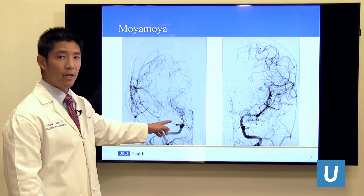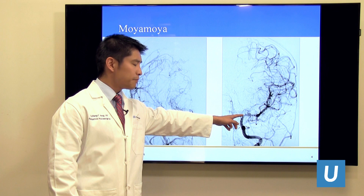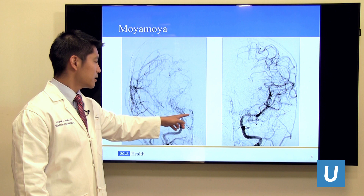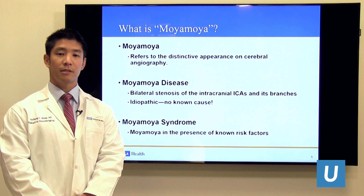Here you see the other side of the same patient, and you can see that Moyamoya is beginning to occur here, but it's not nearly so severe as on this side, where you don't see the main branches of the artery supplying the brain at all. The term Moyamoya is used to describe the angiographic appearance — the appearance on imaging as you just saw.